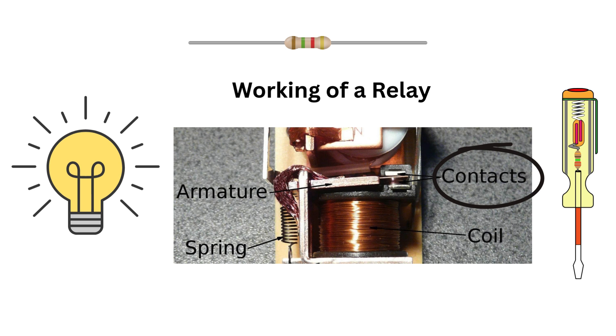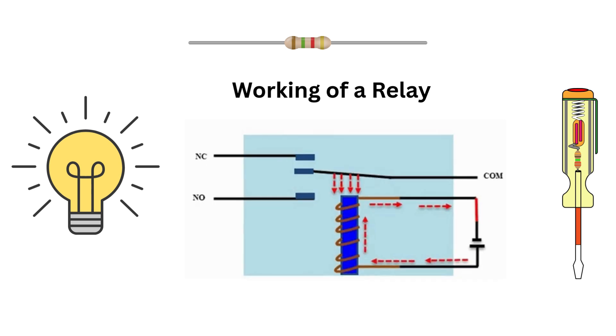When you energize the coil with a small voltage, it creates a magnetic field that pulls the armature. This movement connects or disconnects the high power circuit, turning device on or off.